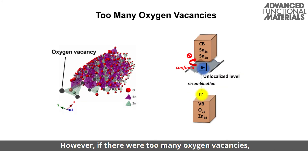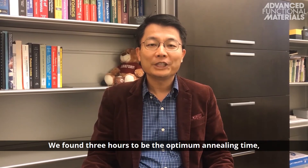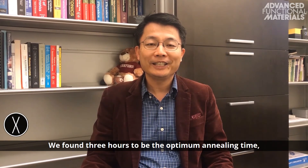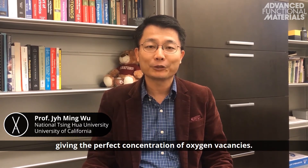However, if there were too many oxygen vacancies, unproductive reaction pathways could dominate, lowering catalyst performance. We found three hours to be the optimal annealing time, giving the perfect concentration of oxygen vacancies.